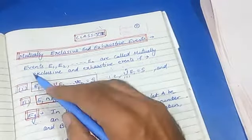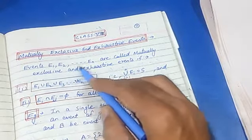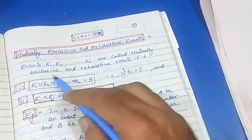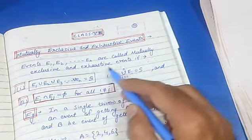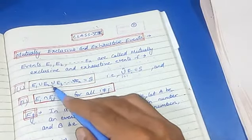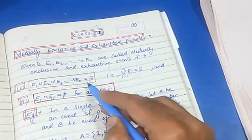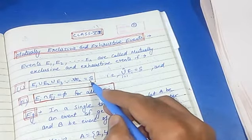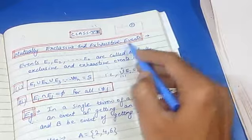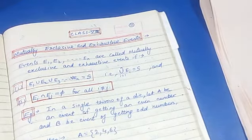Let's see the definition. Events E1, E2, up to EN are called mutually exclusive and exhaustive events if E1 union E2 union E3 up to union EN equals S. This is the first condition, which corresponds to the exhaustive event condition.